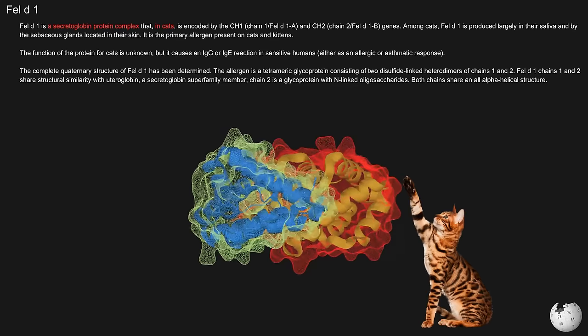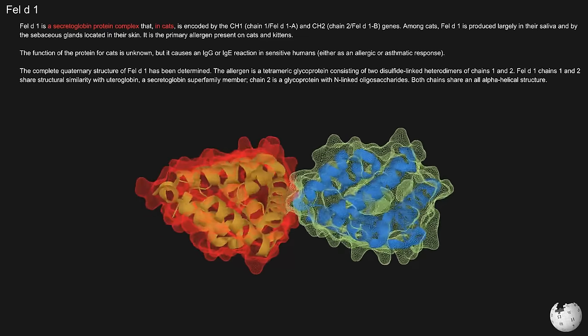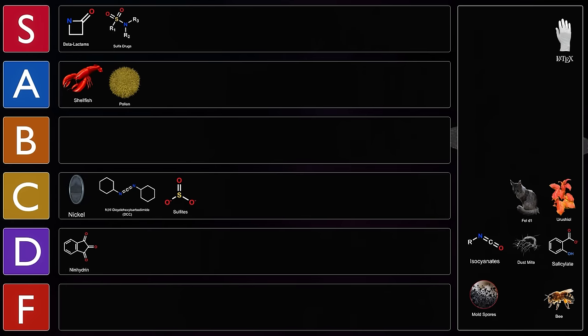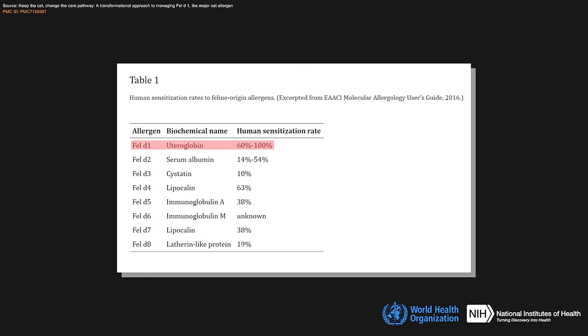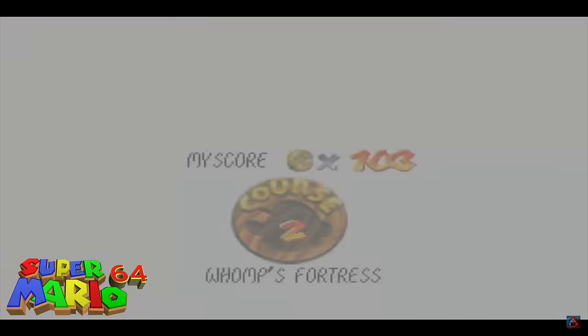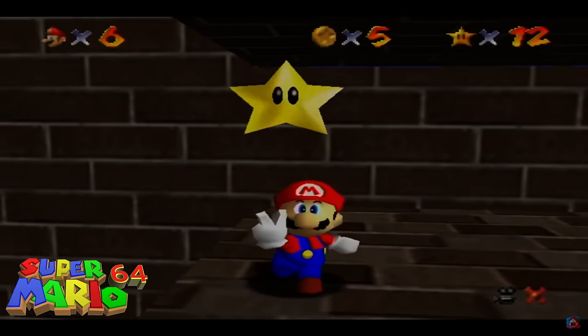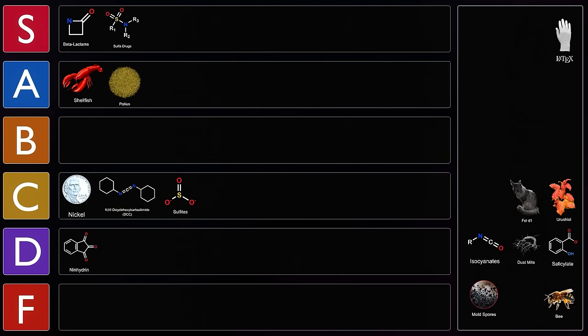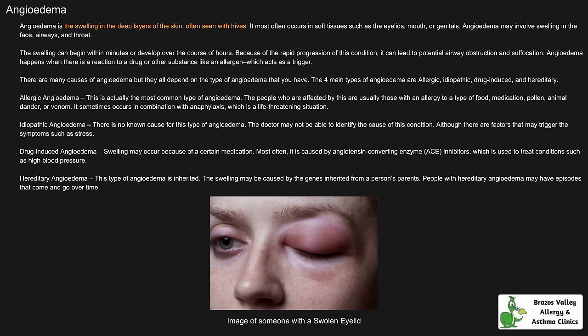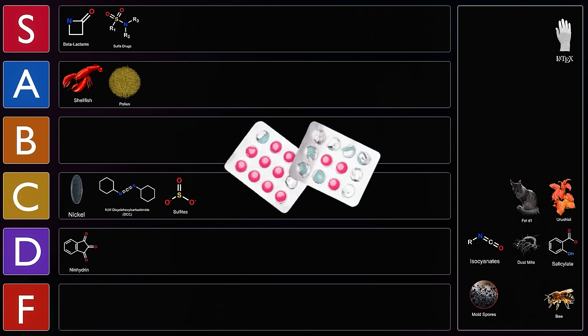Fel-D1 is a secretoglobin protein complex that in cats is encoded by the CH1 and CH2 genes. This protein is produced in cat saliva and sebaceous glands located in their skin and is the primary allergen on cats and kittens. Cat allergies were the first allergies that I ever experienced as a kid. I remember we were playing this one Mario game on the N64 where you have to jump through paintings. For some reason, I just can't remember the name of it for the life of me. Anyway, this story has nothing to do with that, but the people whose house we were at had a cat and my eyes both swelled up to the size of baseballs.